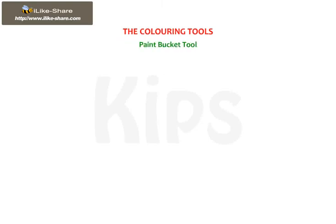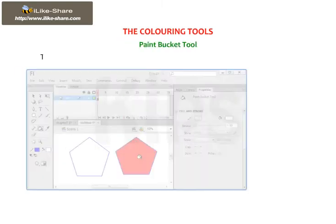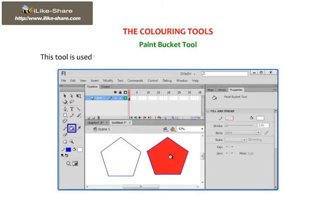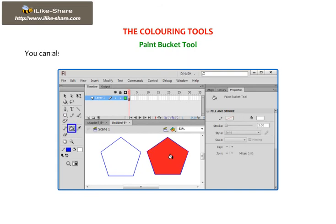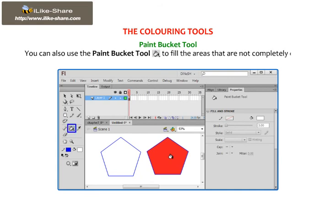Paint Bucket Tool. This tool is used to fill and close areas of an object with colors in a single click. You can also use the Paint Bucket Tool to fill the areas that are not completely closed and change the color of already painted areas.